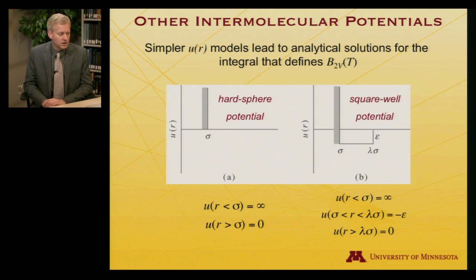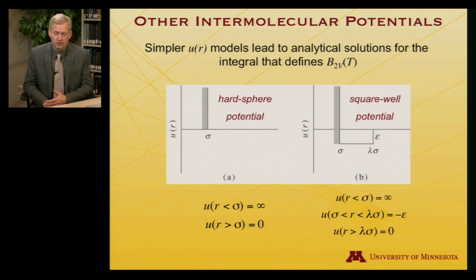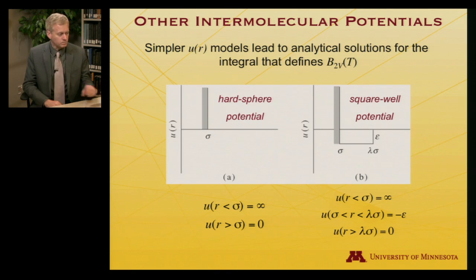Let's think about somewhat simpler potentials. The motivation is that when we plugged the Lennard-Jones potential into the relevant integral to solve for the second virial coefficient, we ended up with an integral that was impossible to solve analytically. Maybe we can gain intuitive insight by using simpler forms for the potential where we really can solve that integral. Two potentials I want to look at briefly: the hard sphere potential, or billiard ball potential, and the square well potential.